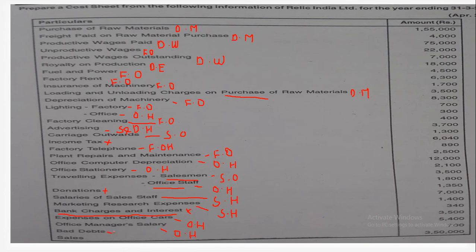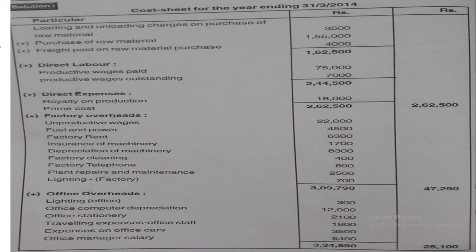Bad debts are related with selling overheads, and finally sales will be written at the end. Now we will post this problem into the cost sheet form. First, raw material purchase is one lakh fifty-five thousand. To this, loading and unloading charges on purchase of raw material of rupees thirty-five thousand are added. Next, freight on raw material purchases of rupees four thousand is added, giving a total direct material of one lakh sixty-two thousand five hundred. In this, we add the direct labor — productive wages paid and productive wages outstanding both form part of direct wages.